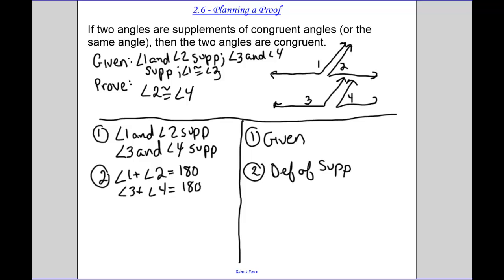Think about it like this: if this first part, then the second part. The second part makes sense because of the definition of supplementary angles. Step three: now I can set those equal because they both equal 180. Angle one plus two equals angle three plus four. That's substitution.